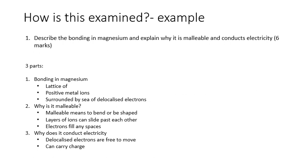So with that in mind, let's just have a quick look at an example. So a possible exam question could be this, describe the bonding in magnesium and explain why it is malleable and conducts electricity for six marks. Now there are three aspects to this question. You've got to describe the bonding, you've got to explain why it's malleable and why it conducts electricity. Treat those separately. Make sure you address all three.